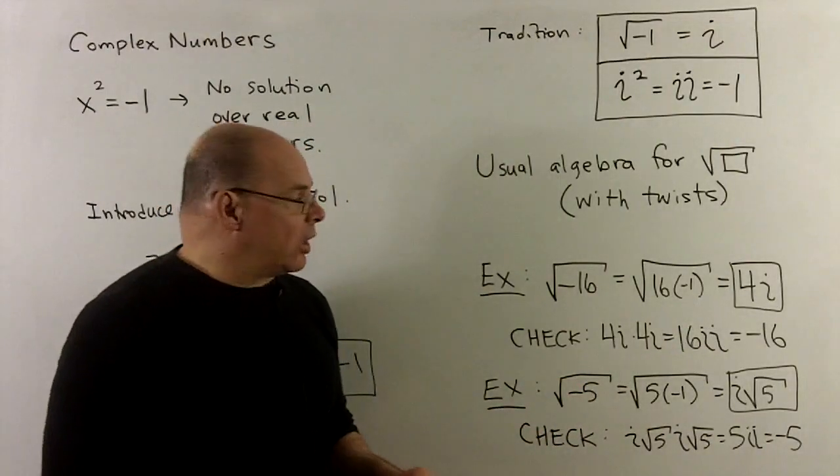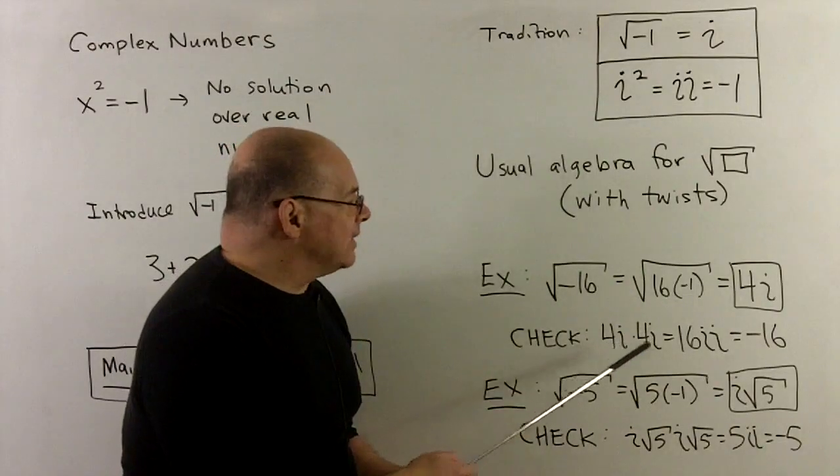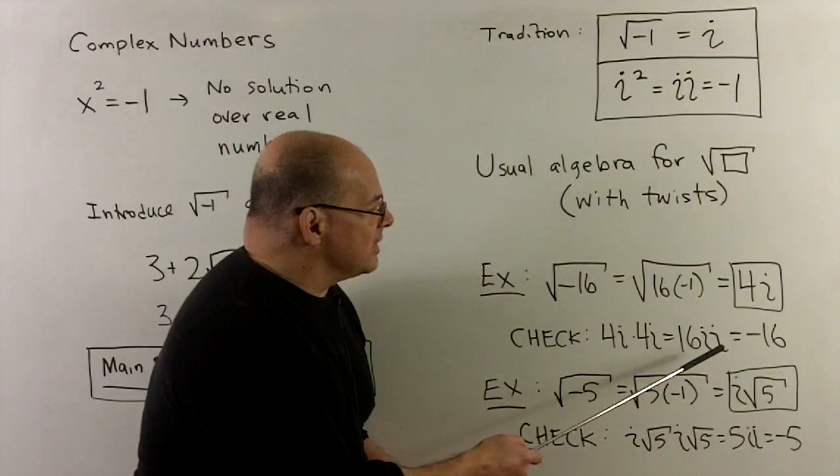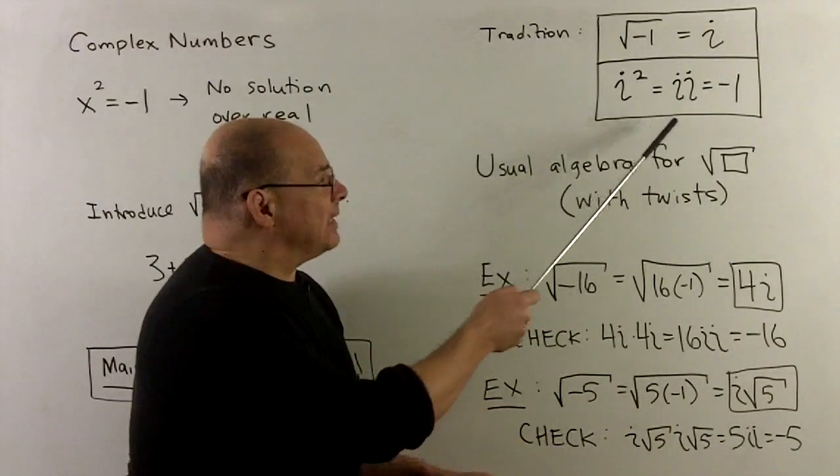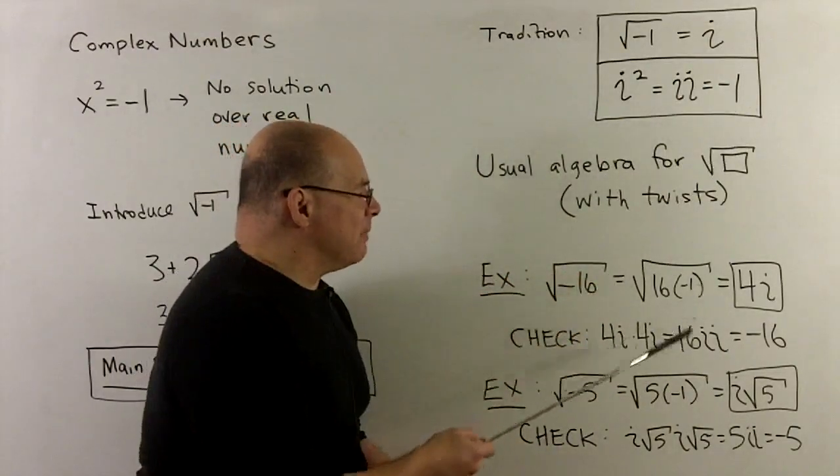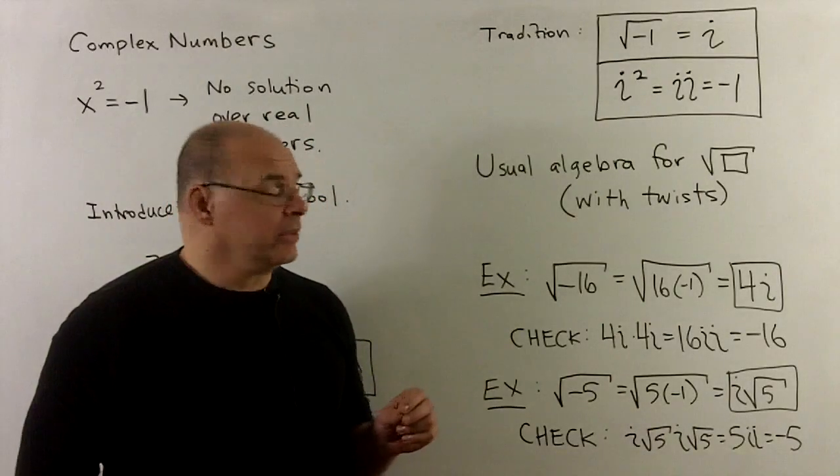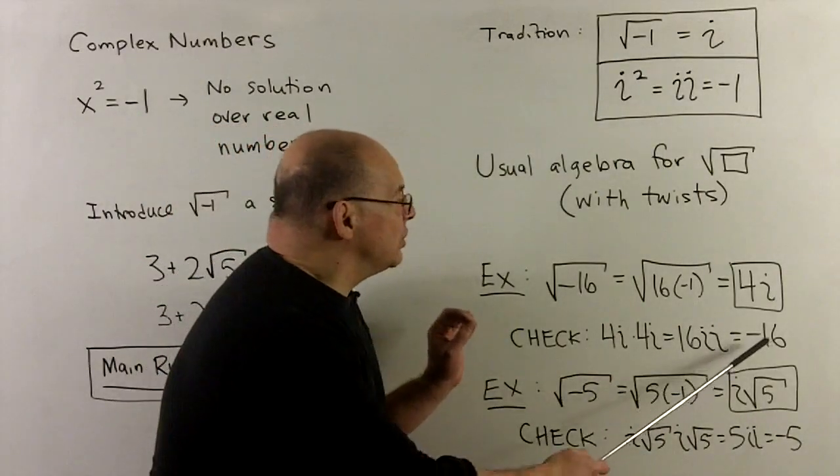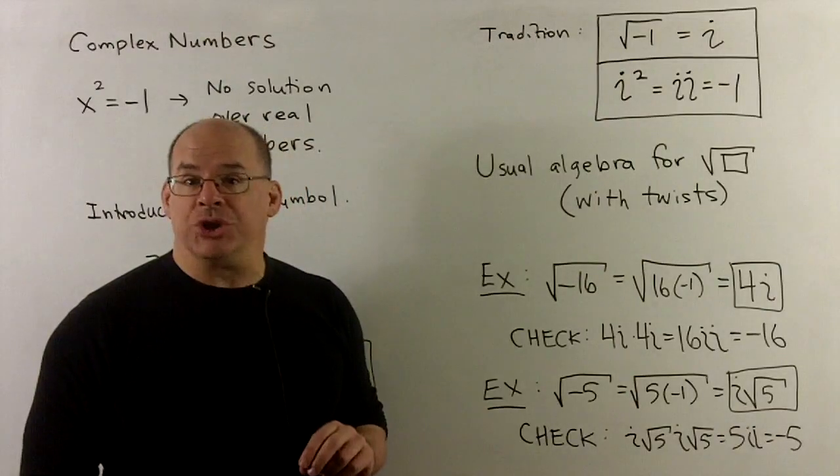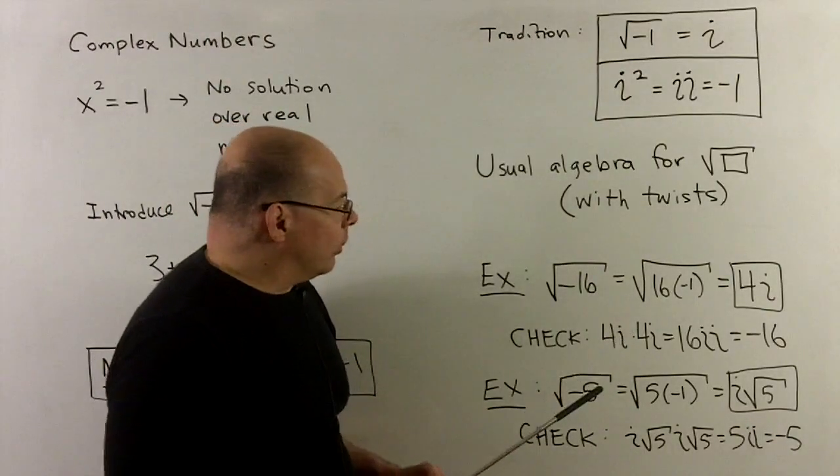As usual, we can check our work. So, I'll take the 4i times 4i. We get 16, and then it's i times i. But, by definition, i times i is minus 1. And that gets us back to our minus 16. So, if you got this, you're actually in very good shape.